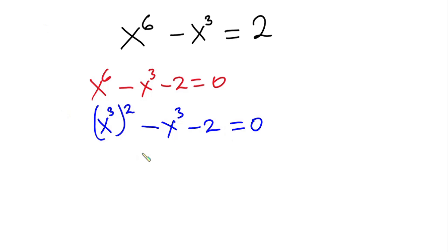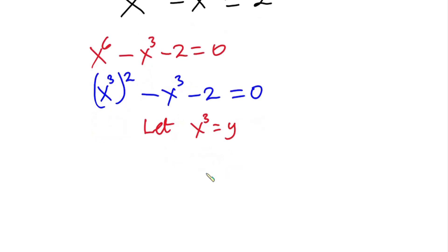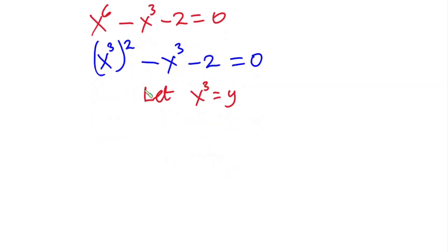From here I will let x to the third power equal y. So wherever I see x to the third power I'm going to put y, giving us y squared minus y minus 2 is equal to zero.